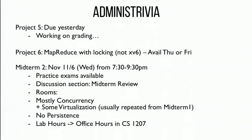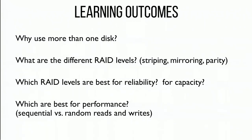So today we're going to be talking about persistence. We're going to continue on into RAID — looking at what is the motivation for using more than one disk, why we want a redundant array of inexpensive or independent disks. We'll talk about RAID levels zero, one, four, and five, and how each level performs differently according to metrics like reliability, capacity, and performance.